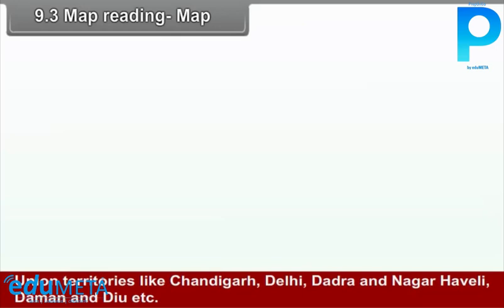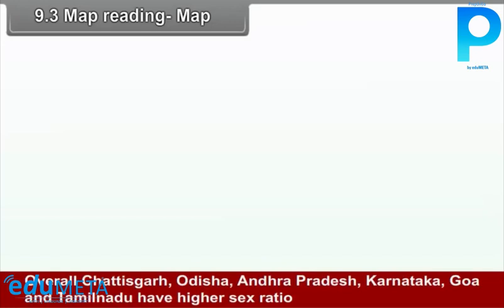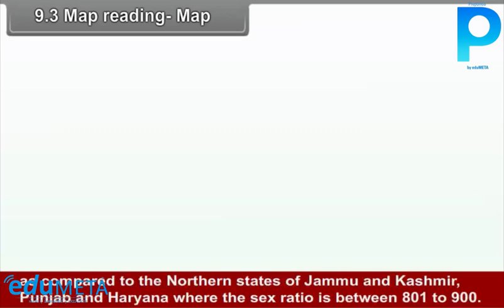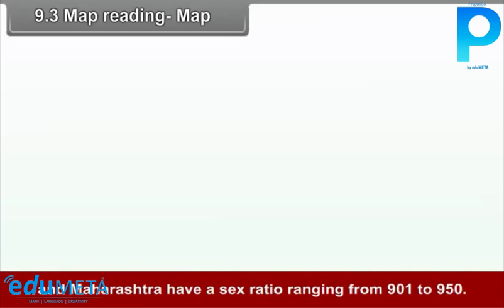Union territories like Chandigarh, Delhi, Dadra, Nagar Haveli, Daman and Diu, etc. have a very low sex ratio, except Puducherry which has a sex ratio of 1038. Overall, Chhattisgarh, Odisha, Andhra Pradesh, Karnataka, Goa, and Tamil Nadu have higher sex ratios compared to the northern states of Jammu and Kashmir, Punjab, and Haryana, where the sex ratio is between 801 to 900. Uttar Pradesh, Arunachal Pradesh, Nagaland, Rajasthan, Gujarat, Madhya Pradesh, and Maharashtra have a sex ratio ranging from 901 to 950.